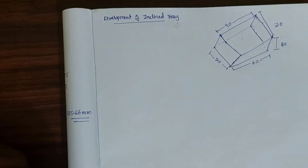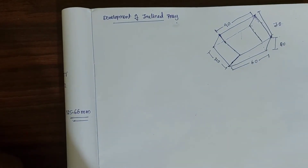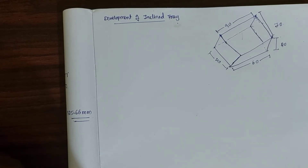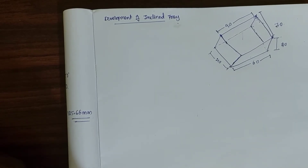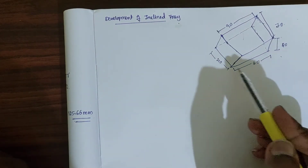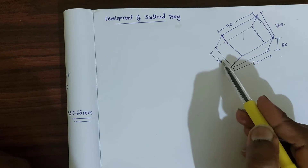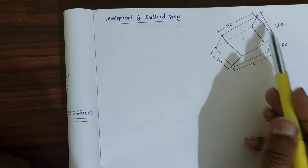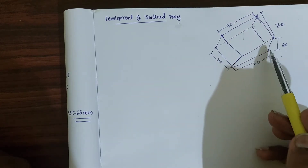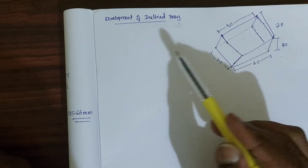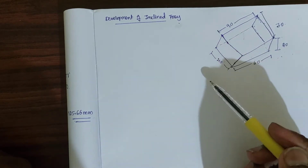Hello everyone. Today we are going to discuss the development of an inclined tray, which is a sheet metal work operation. The dimensions are: base dimensions 40mm and 60mm, top side dimensions 70mm and 90mm, and wall height of 20mm. Using these dimensions, we will develop the inclined tray.